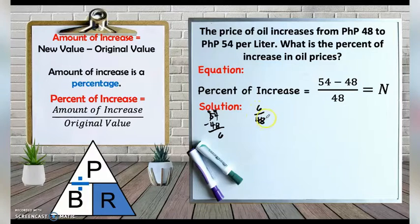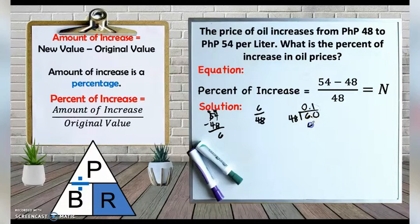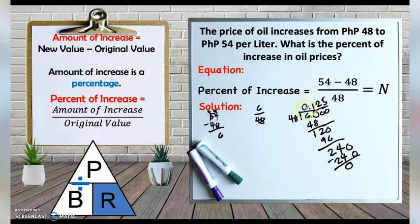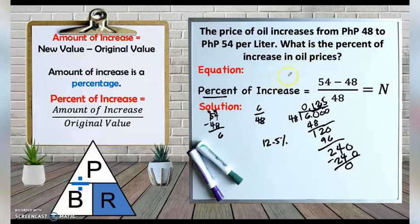We divide 6 by 48. Since 6 divided by 48 is less than 1, we add a decimal point and continue dividing. Working through the long division: 60 divided by 48 is 1, remainder 12; 120 divided by 48 is 2, remainder 24; 240 divided by 48 is 5, no remainder. So the result is 0.125. To change this to percent, move the decimal point two places to the right, giving us 12.5%. The oil price increased by 12.5%.